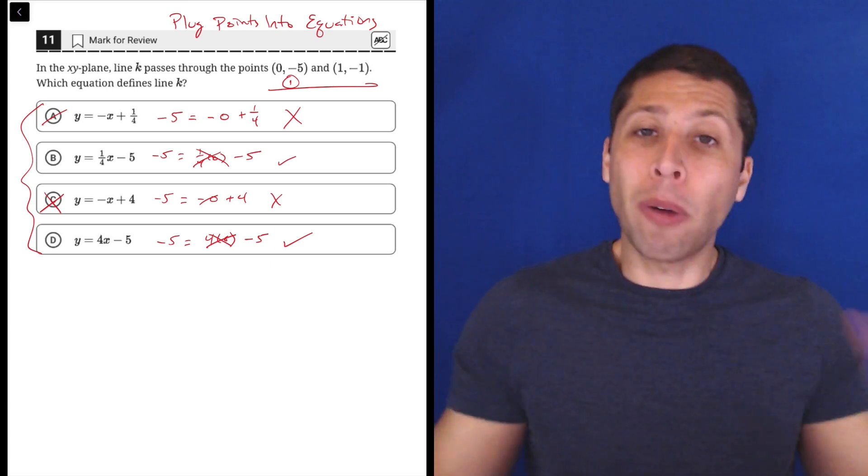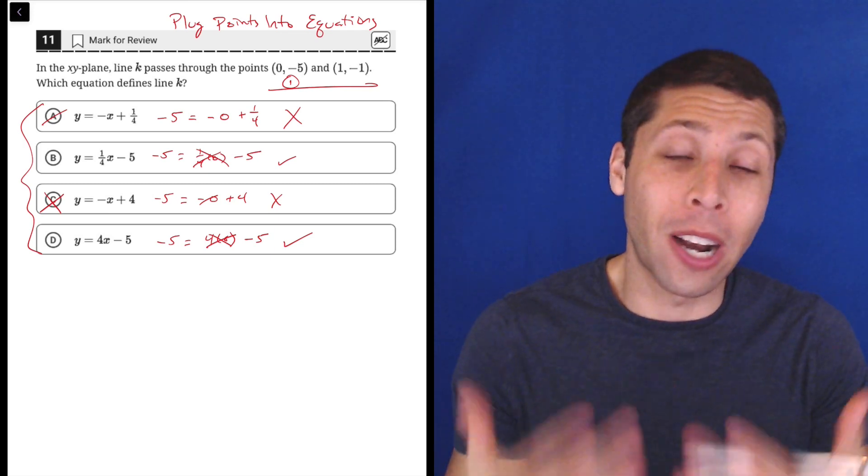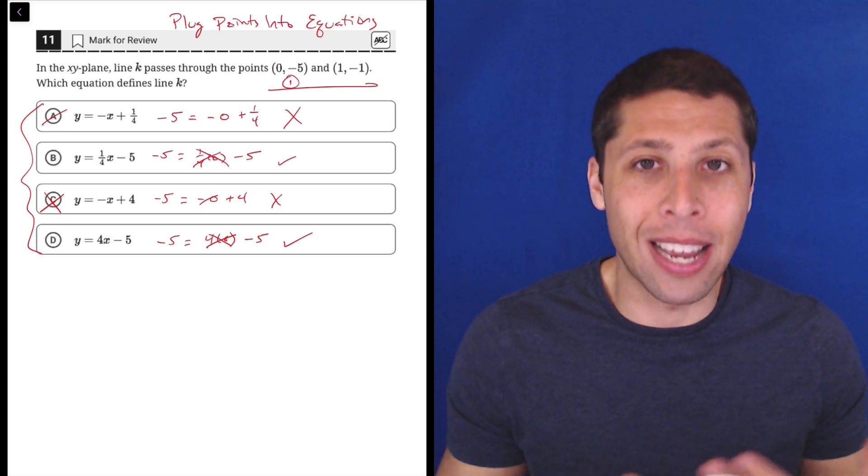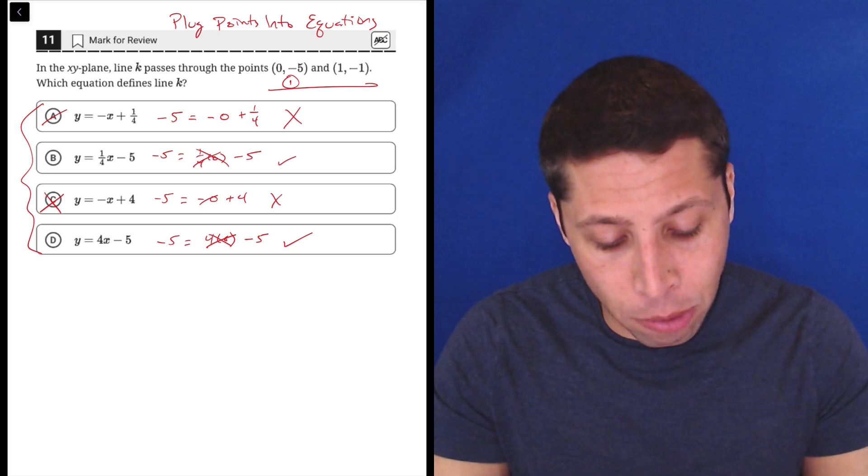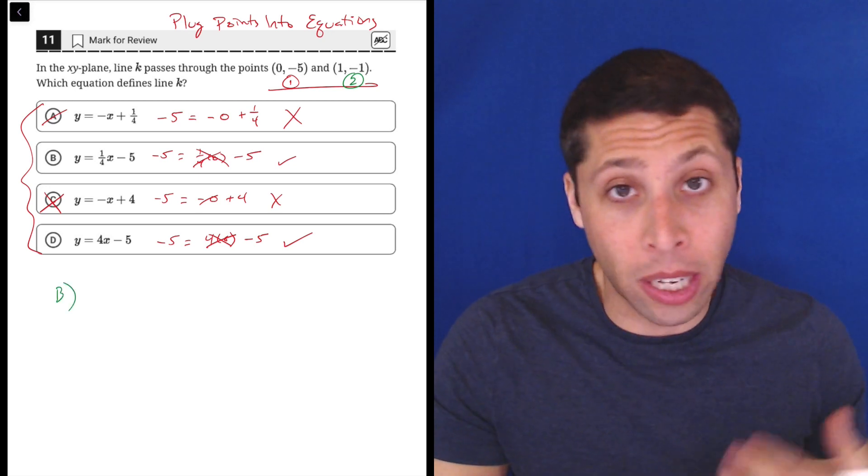But I'm not bothered by that. That took me like three seconds. I showed way more work to you than I would have done in my head because I'm comfortable plugging in 0. But I'm very quickly down to two choices. Now I would just say, let's do this other point. And so just do B and D - we've already gotten rid of A and C, we don't need to test them again.